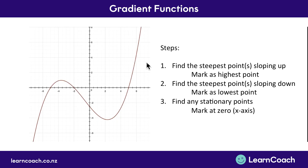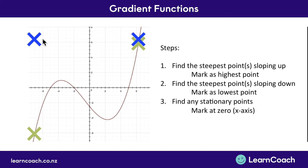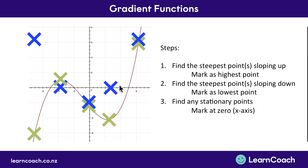But what happens if you get something a little more complex? We follow the exact same steps. Here with this cubic we still find the steepest points sloping upwards and mark them. You'll notice there are two points which are both really steep, so mark them both and on your new set of axes mark them both right up high as your steepest positive gradients. Then find the steepest points sloping downwards — there's only one, and it's not quite as steep down as the upward ones, so we put it just a little way down rather than at the very bottom. Finally, look for stationary points with zero gradient and mark them zero on the axes. Connect all your blue crosses with a smooth line — in this case it looks like a parabola — and that gives you your gradient function.